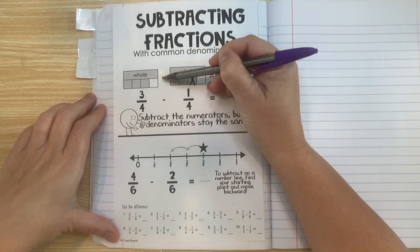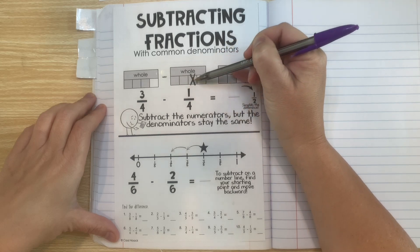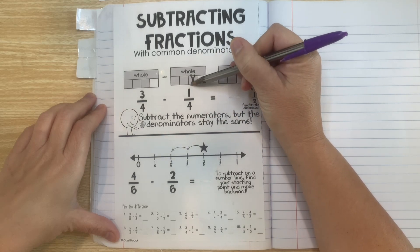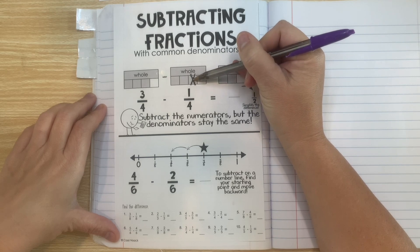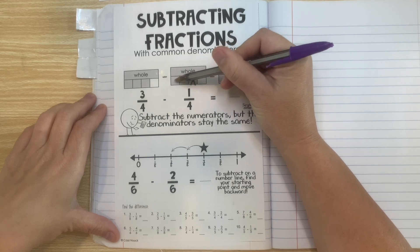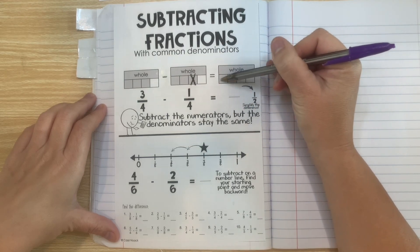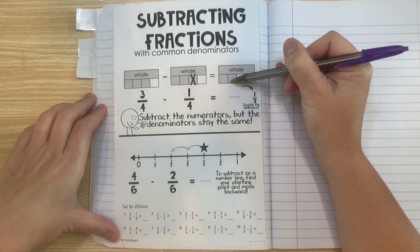Now we are going to subtract one of those 3 fourths. So this X represents taking it away. So if we take it away we're left with these two which is shown right here in the difference.